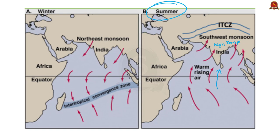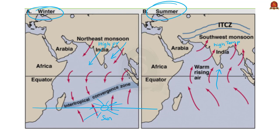In winter, the sun's apparent position is vertically over the tropic of Capricorn in the southern hemisphere. As a result, the pressure system in the northern hemisphere is reversed — high pressure over the land and low pressure over the sea, because land cools faster than water. So winds flow from the high pressure area in the northeastern part of the Indian subcontinent to the low pressure area. During this, parts of the wind pass through the Bay of Bengal, absorb moisture, and precipitate upon reaching Tamil Nadu and Andhra Pradesh. Thus the monsoon is reversed to form the northeast monsoon, which advances as soon as the southwest monsoon retreats.